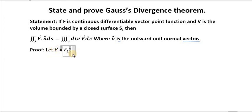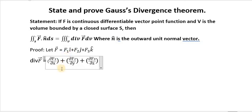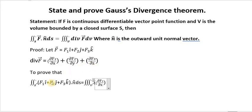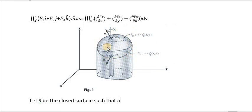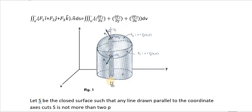Proof: Let the vector F equal F1 i plus F2 j plus F3 k, and divergence F equal ∂F1/∂x plus ∂F2/∂y plus ∂F3/∂z. Let us consider a diagram where S is a closed surface such that a line drawn parallel to the coordinate axis cuts S at not more than 2 points.